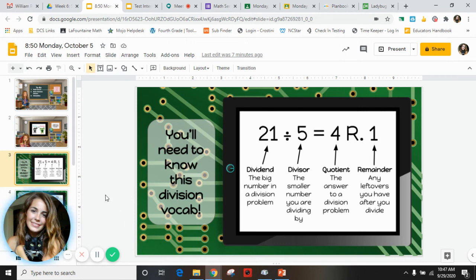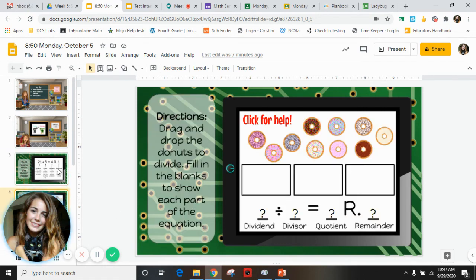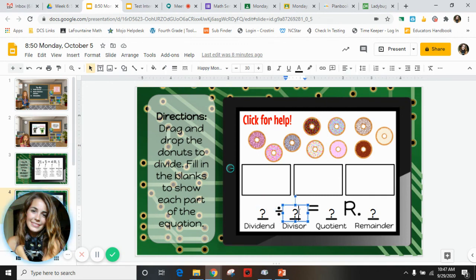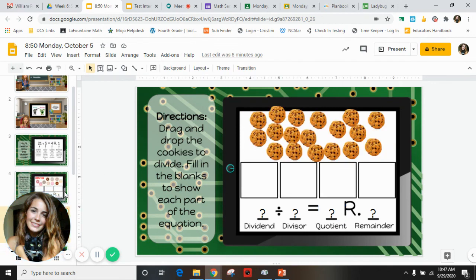Today you're going to be asked to model division using objects. It says to drag and drop the objects into equal groups, and then it wants you to fill in the different parts of the division problem. If you're confused or you don't know how to get started, make sure you click the 'Click Here for Help' button. That will open a video that will show you exactly how to solve this problem, that way you can go on to the next problem and try it yourself.